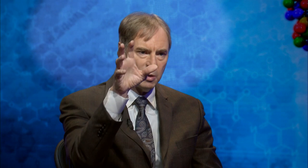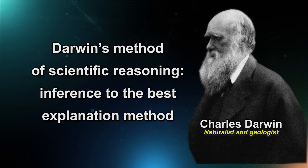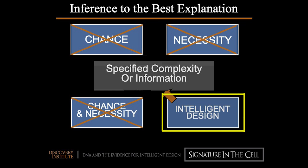What we have developed in making the case for intelligent design in biology is a positive case for intelligent design as the best explanation of the key features of life — the information-bearing properties of DNA, the information processing systems that express that information, and the circuitry that uses it. We have developed a positive case based on those features and also based on Darwin's own method of scientific reasoning, arguing that intelligent design provides the best, most causally adequate explanation of the key features we see in life.